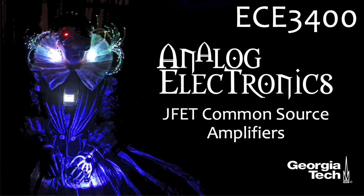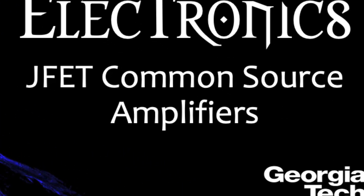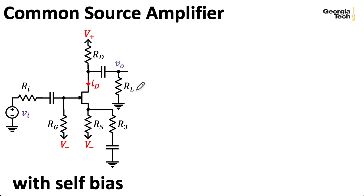Here we will use the Norton equivalent for the drain to analyze common source amplifiers. I've included a load resistance. This is generally not thought of as part of the amplifier itself. Down here we have a source resistance, and I've included this circuit here for a flexible bypass scheme.